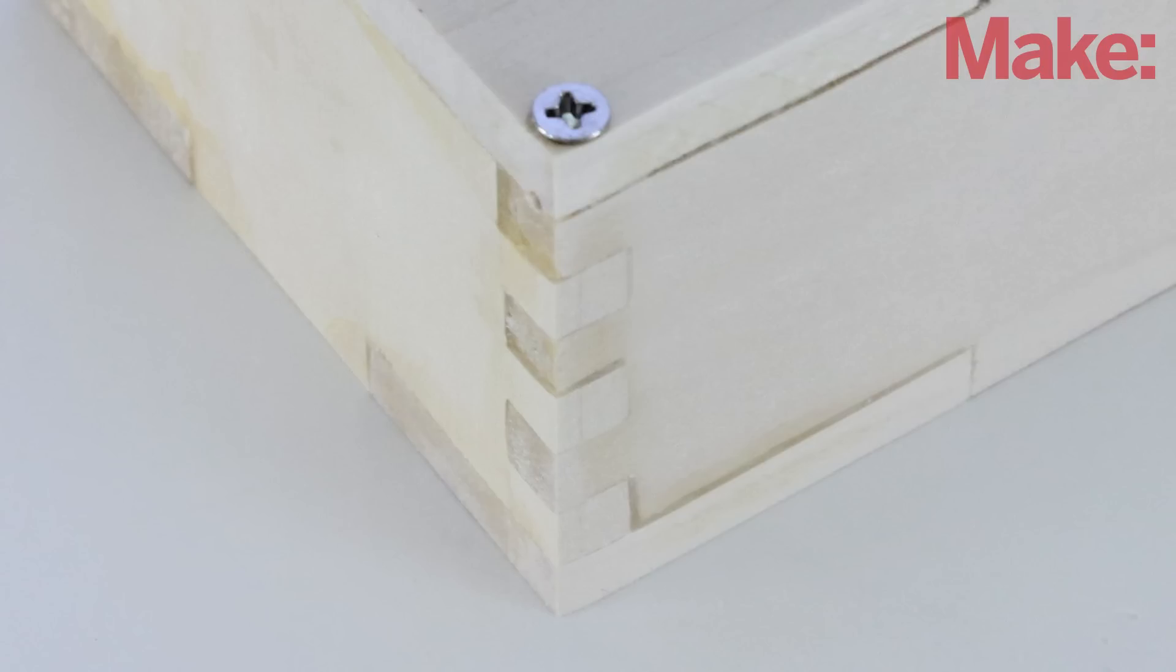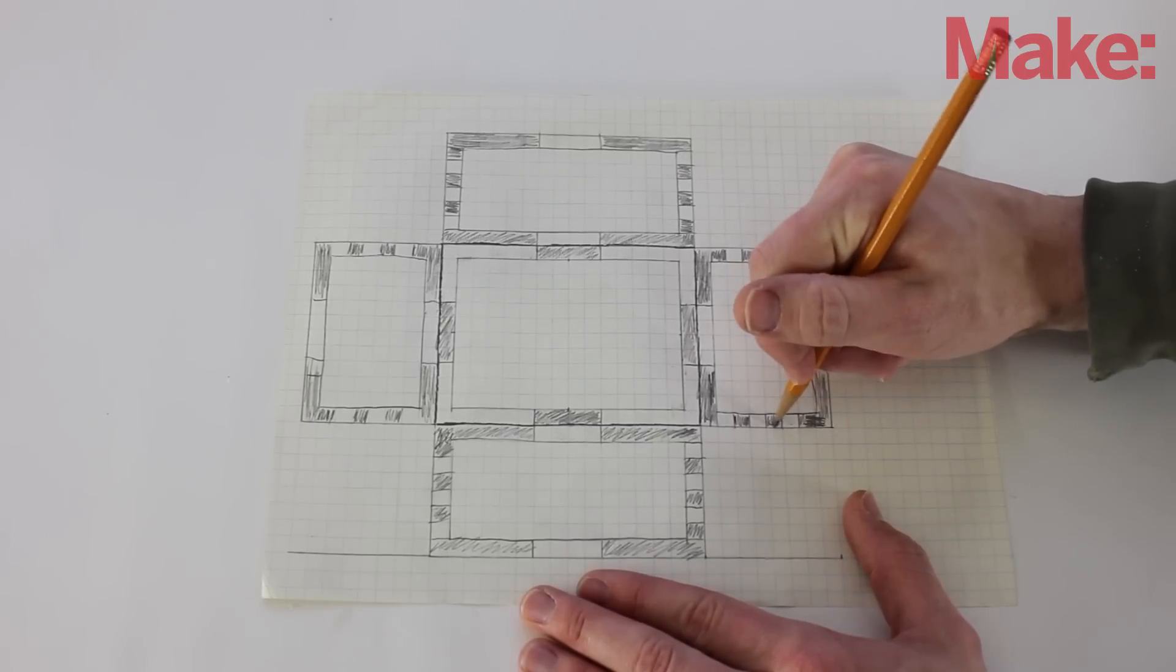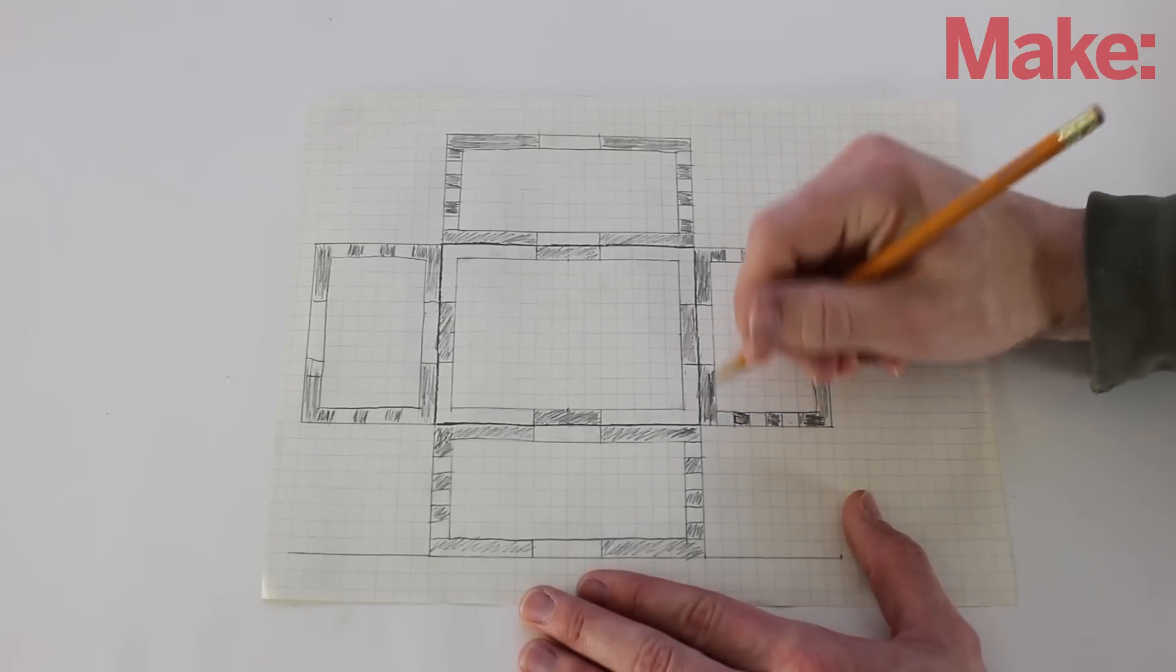Next, you need to decide how the walls will be connected. I chose to use simple box joints. You can now work out how big each side needs to be and how to space the joints. You can do this with a simple sheet of graph paper.